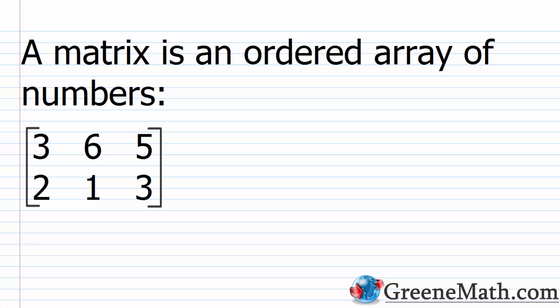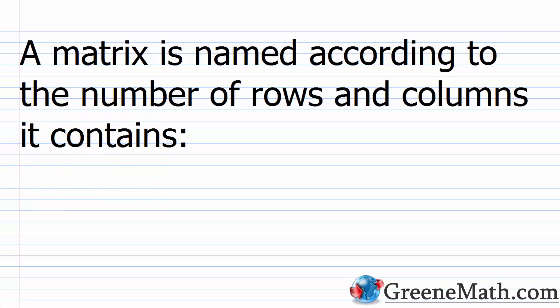So a matrix is an ordered array of numbers — it's just a way to store numerical information. You'll see brackets, and inside the brackets you have rows going across and columns going down. A matrix is named according to the number of rows and columns it contains: rows first, followed by columns.